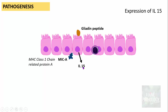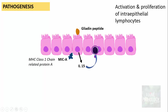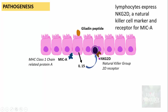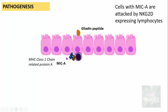Interleukin-15 plays a very important role: it activates and results in proliferation of intra-epithelial lymphocytes. Once activated, these intra-epithelial lymphocytes express the marker NKG2D — natural killer group 2D receptor. This marker is a receptor for MICA. Since MICA is expressed on stressed cells, the cells bearing MICA are attacked by NKG2D-expressing lymphocytes.